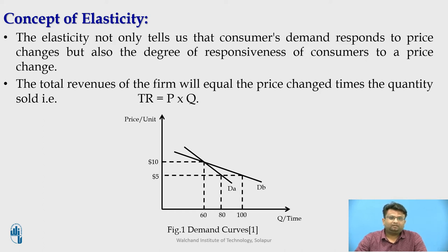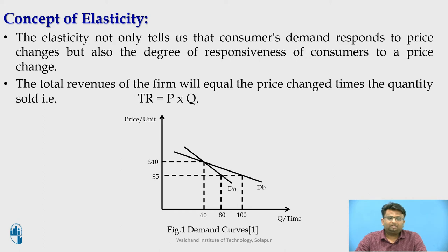As shown in the figure, let DA be the demand for cheese in Switzerland and let DB be the demand for cheese in England. At the price of $10, the quantity demanded in both countries is 60. When the price falls from $10 to $5, the quantity demanded for cheese increases in both countries. However, for the same price change from $10 to $5, the change in quantity demanded increases more in England compared to Switzerland. In other words, for the same decrease in price, the quantity demanded responds more in England than in Switzerland. We would describe this by saying that the demand for cheese is more elastic in England than in Switzerland. Elasticity, then, is another word for responsiveness.